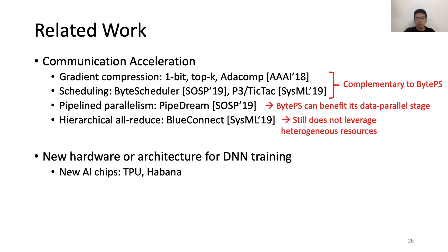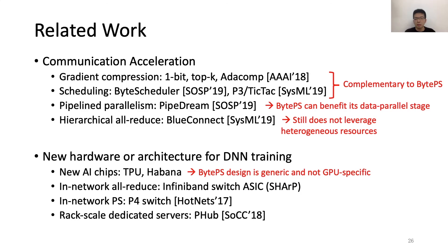Another dimension is using new hardware or architecture for DNN training. For example, there are many new AI chips such as TPU and Habana. And in fact, BytePS design is generic and can also apply to these chips. Some researchers use new architecture, including using the InfiniBand switch ASIC to perform in-network all-reduce, or using P4 switch to perform in-network PS, and using rack-scale dedicated servers with multiple NICs to accelerate the communication. But they require special redesign of the hardware or architecture. And in our work, we focus on using more generally available devices.